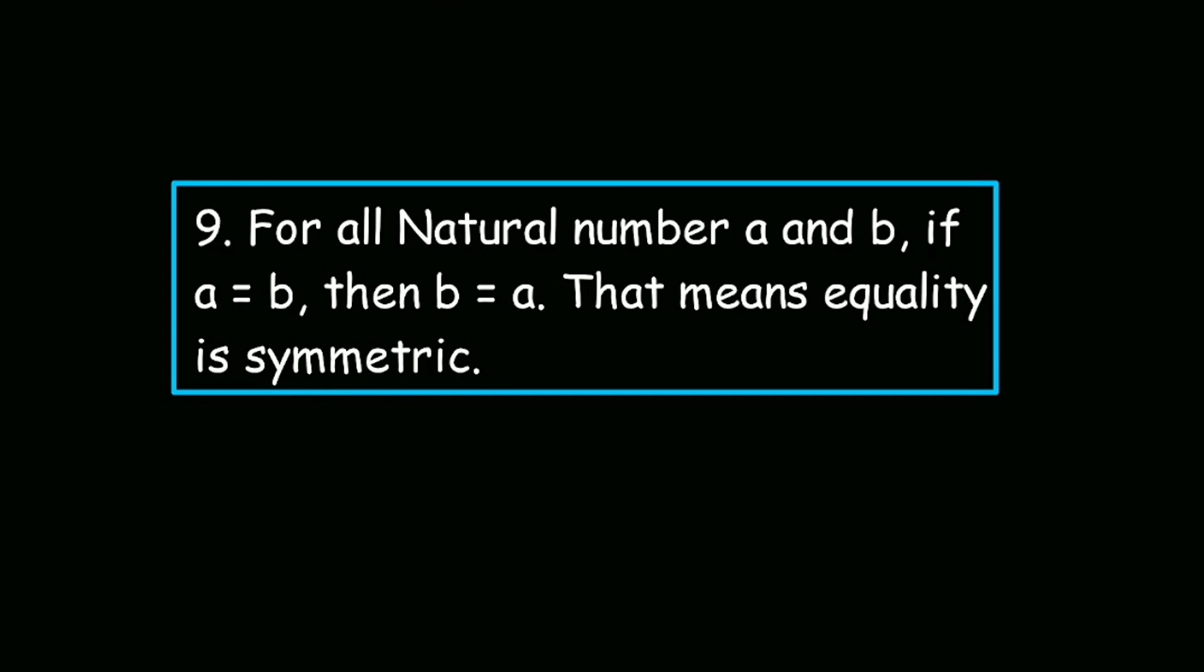Our ninth axiom is, for all natural numbers a and b, if a is equal to b, then b is also equal to a. That means equality is symmetric. Both greater than and less than relations are examples of relations that are not symmetric, because a is less than b doesn't imply b is less than a.